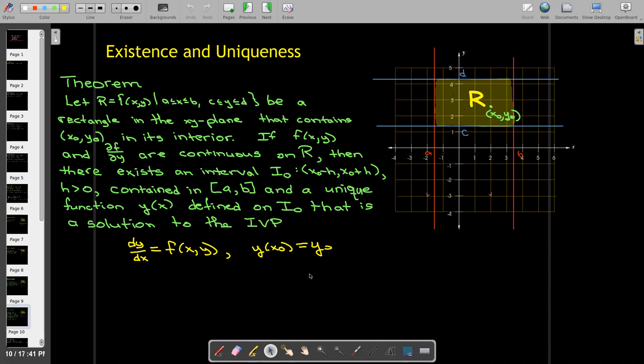So what are the things that we need to check? Well, we need to check if the functions f(x,y) and the partial derivative of f with respect to y are continuous, essentially in a rectangle surrounding the initial condition point.